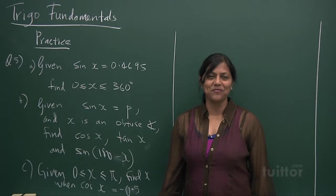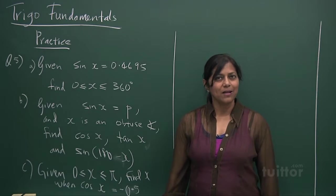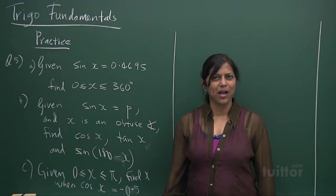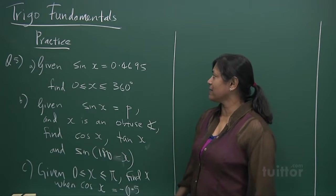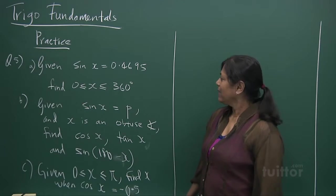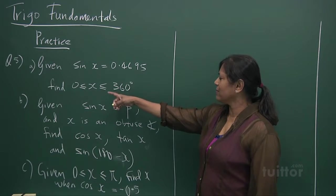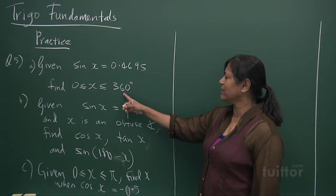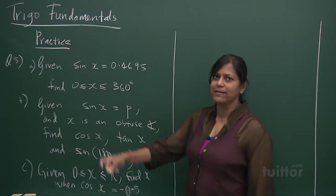All right, we're going to come to a fifth sum, and we look at the parts. I think it's getting better and better each time, aren't you? Now let's look at this sum. They say the sine x is equal to 0.4695, and they tell us that x is lying between 0 to 360 degrees.